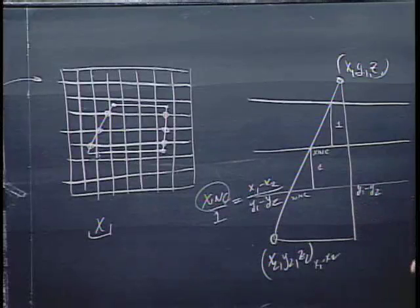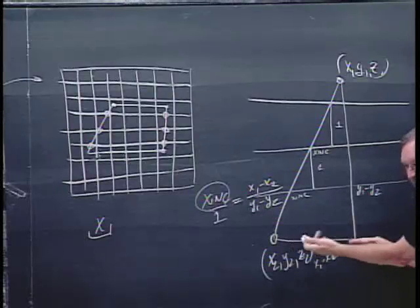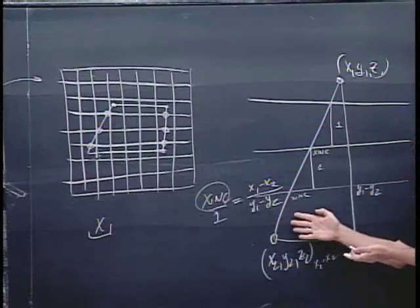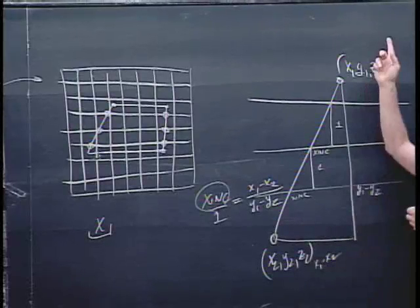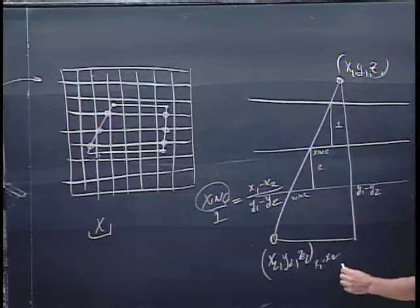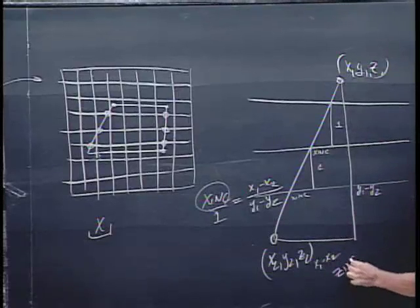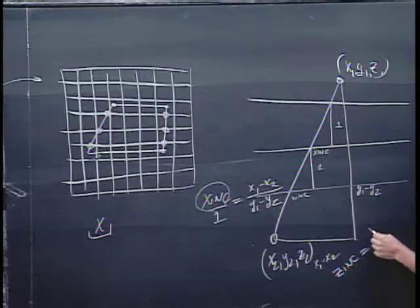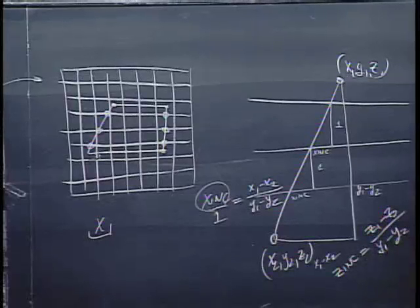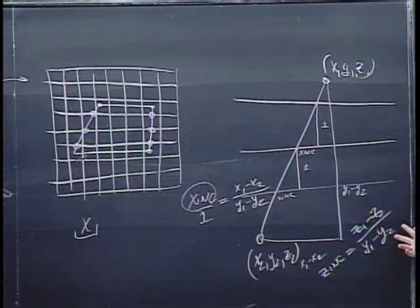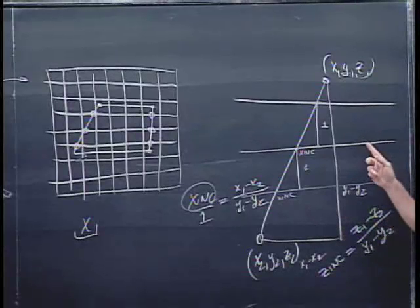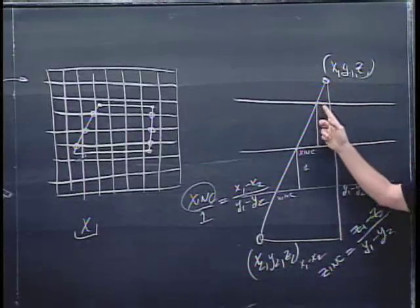There's also a Zinc — the increment in Z as we move down scan lines. Similarly, Zinc / 1 = (Z1 - Z2) / (Y1 - Y2). Given these two points, I can calculate Xinc and Zinc, which move my X and Z values from one scan line to the next.